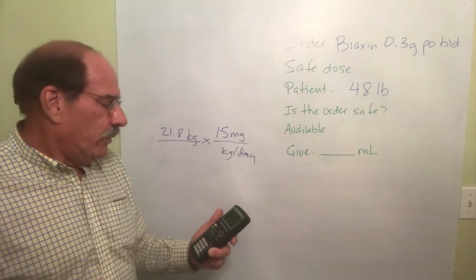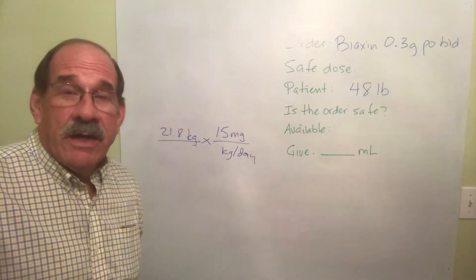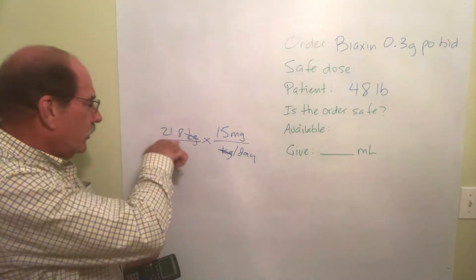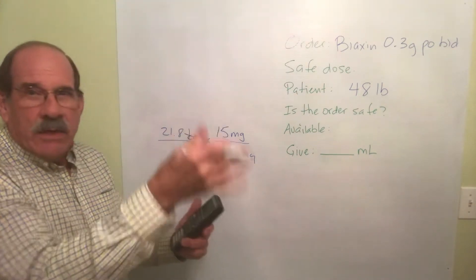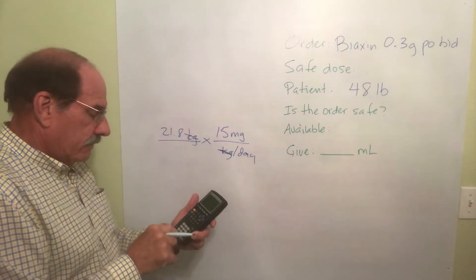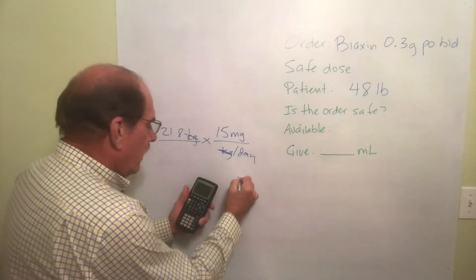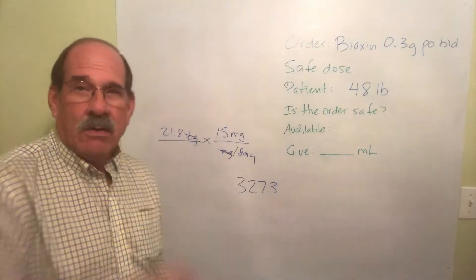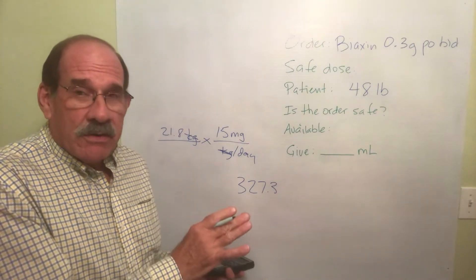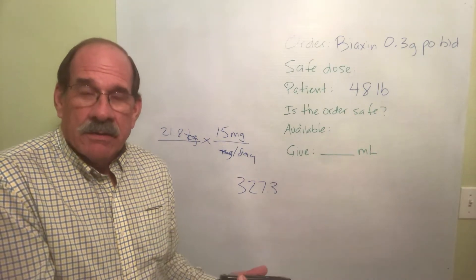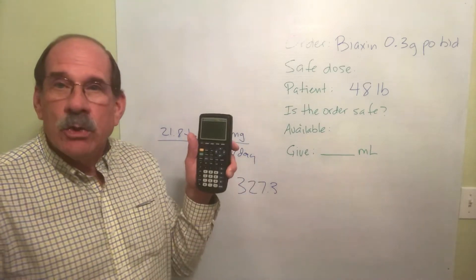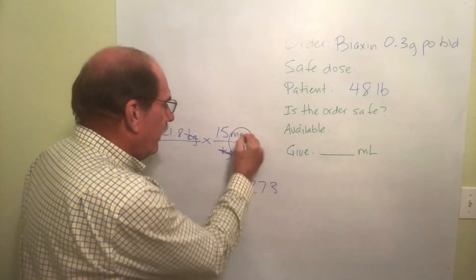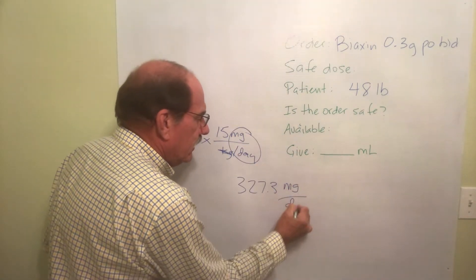It's really 21.818181... and it keeps going forever. Kilograms will cancel out because it's on the top and on the bottom. So 21.81818... times 15 equals 327.272727... — it goes on and on. Again, don't round this off; leave the full number in the calculator. That is the important step: that is how many milligrams per day is safe.